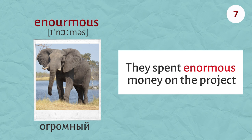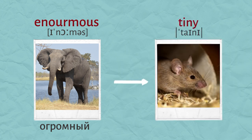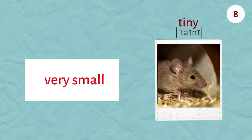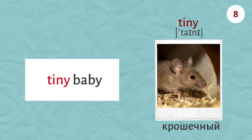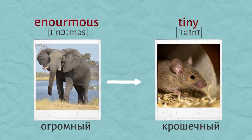An antonym to enormous is tiny. Tiny. Very small. For example, tiny baby. She is a tiny baby. Please repeat. Enormous.